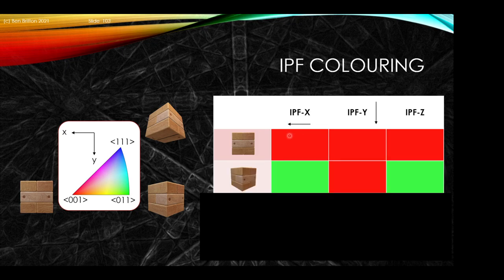If we take a new cube rotated about the Y axis, pointing along Z we now have a 110 direction — so it is green. The cell is still pointing 100 along Y, and if we look along X it has rotated 45 degrees, giving a 110 pointing along X — so this is why you get green, red, green.